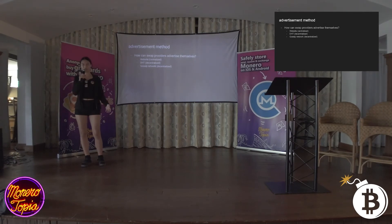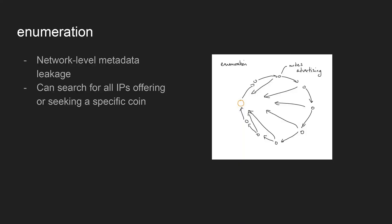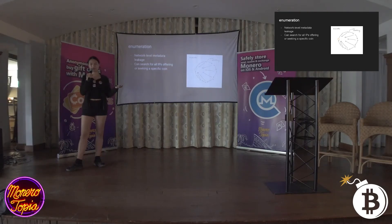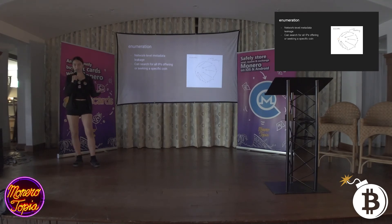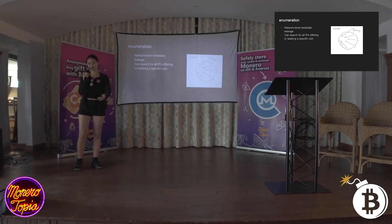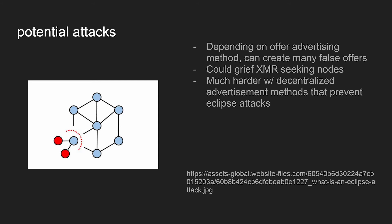A gossip network might potentially protect against enumeration concerns. Enumeration is basically a metadata leakage where you can find everyone on the network and all their IPs. On a website that's pretty trivial. On a DHT it's not as trivial but you can still do it. On a gossip network this might be harder. Either way it's concerning because you can just put all these IPs in a table and say these are all the people with Monero. There are also potential attacks due to centralization — you can make a huge number of false offers and grief people.